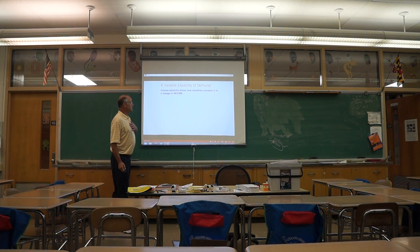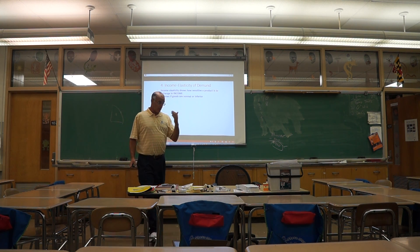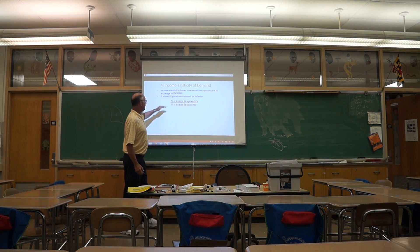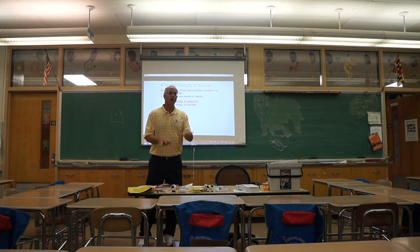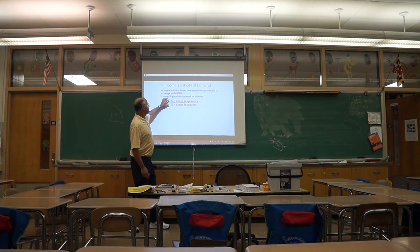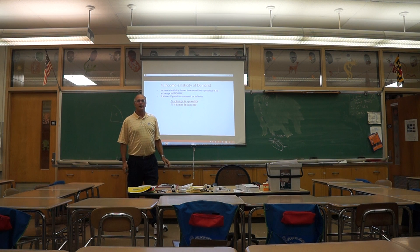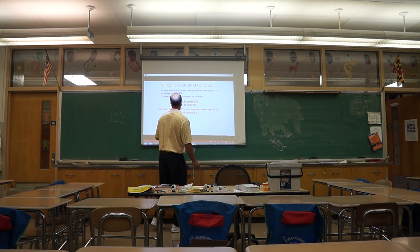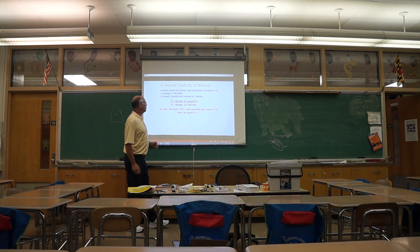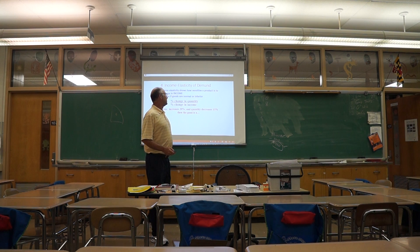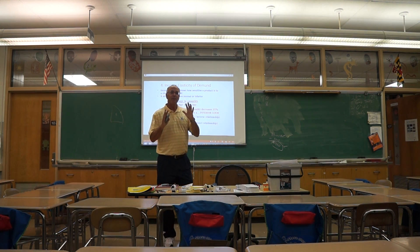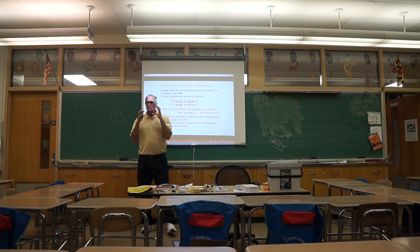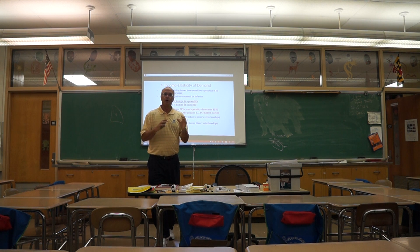The last type is income elasticity, which tells you if goods are normal or inferior. The formula is percentage change in quantity over percentage change in income — the money (income) is always on the bottom. For example, if income increases 20% and quantity decreases 15%, you get a negative number, which means it's an inferior good. A positive number means it is a normal good.